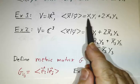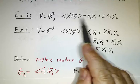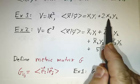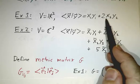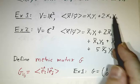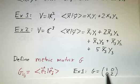So in this example, you take the inner product of e1 with e1, you get 1 plus 0 is 1. Inner product of e1 with e2 is 0. Inner product of e2 with e1 is 0. The inner product of e2 with e2 is 2, not 1. So our metric matrix is 1, 0, 0, 2.